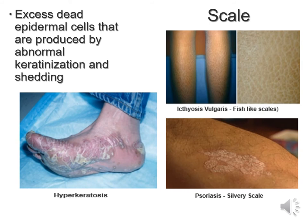Scale is essentially dead tissue — excess dead epidermal cells produced by abnormal keratinization and shedding. They're like fish scales. Examples could be hyperkeratosis, psoriasis, or ichthyosis vulgaris. There are numerous causes — you can also develop scale just as a result of getting older and having dry skin.